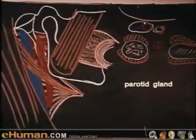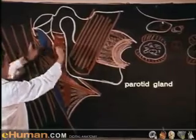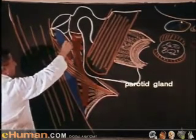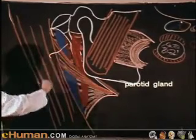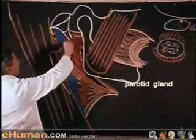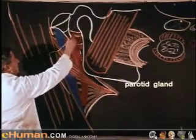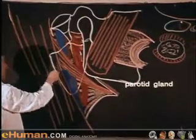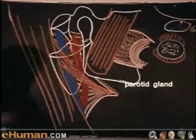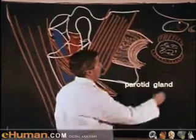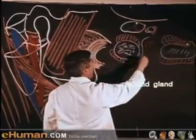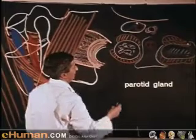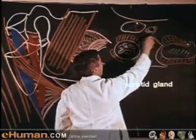Now let us draw in the outline of the parotid gland sitting in this wedge-shaped depression between the mandible and the sternomastoid, passing in here and overlapping the surface of the sternocleidomastoid. It encircles the carotid and overlaps this region, coming down here. It will overlap forward, come around and actually pass in between the medial pterygoid and the mandible at the pterygoid process.